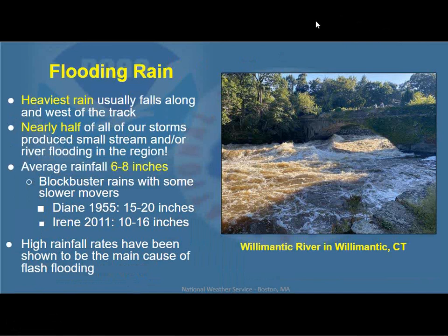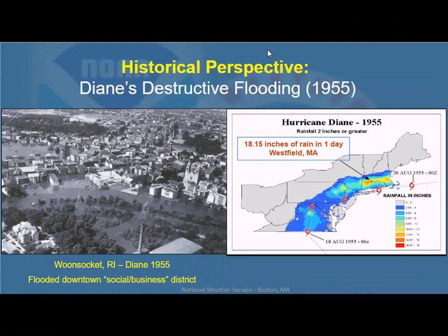Speaking of rainfall, the average for our systems here in southern New England is about six to eight inches. If you have a slower moving storm, you can certainly get some blockbuster rainfall totals. Diane in 1955 dumped 15 to 20 inches of rain, and Irene in 2011 dumped 10 to 16 inches across parts of western Massachusetts, western Connecticut, and eastern New York. It's the high rainfall rates that have been shown to be the main cause of flash flooding — not so much the storm totals — and we had a really good example of that last year with Ida's remnants.